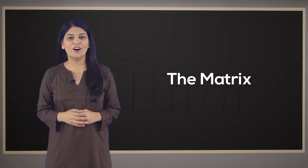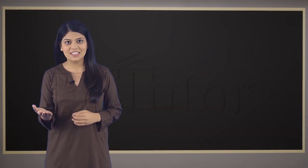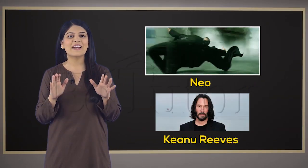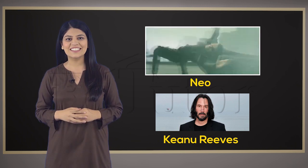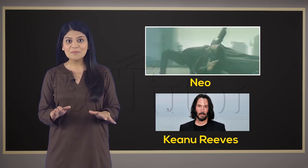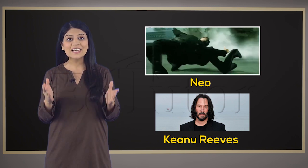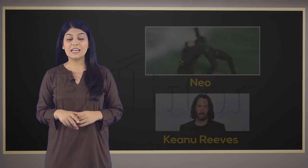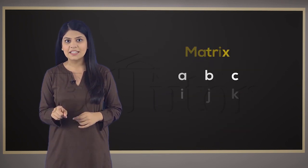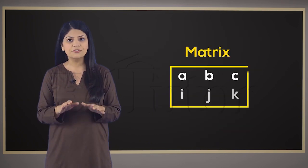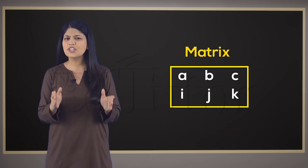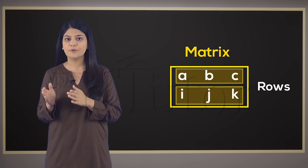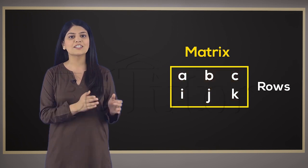You have probably heard of the matrix. Neo, played by Keanu Reeves, dodging bullets was an iconic scene that's impossible to forget. But in mathematics, a matrix is just a rectangular arrangement of rows and columns.